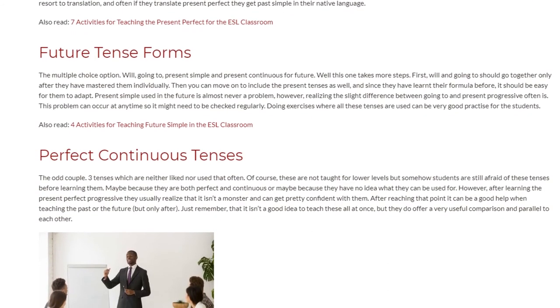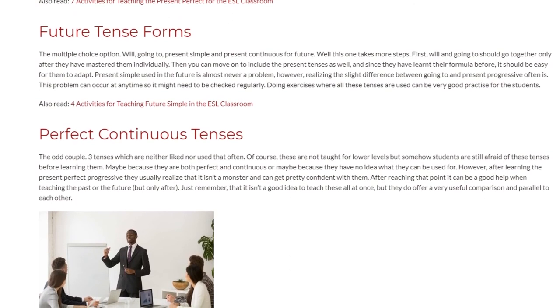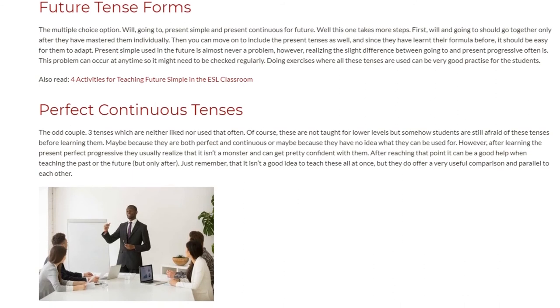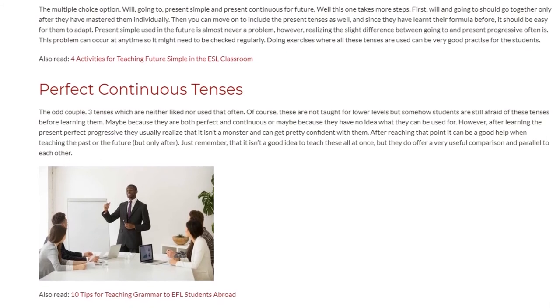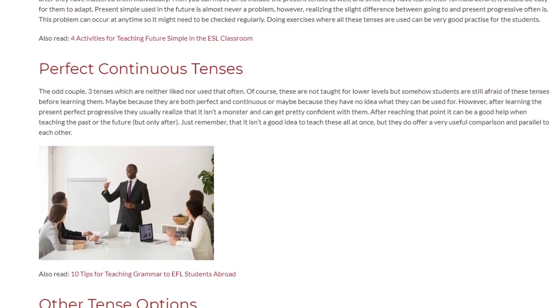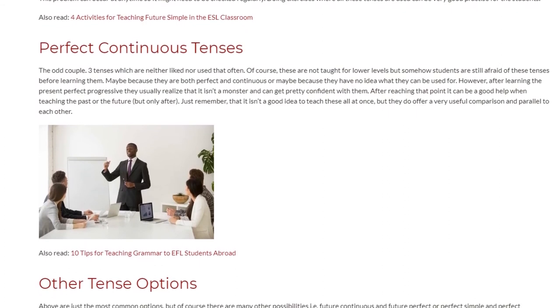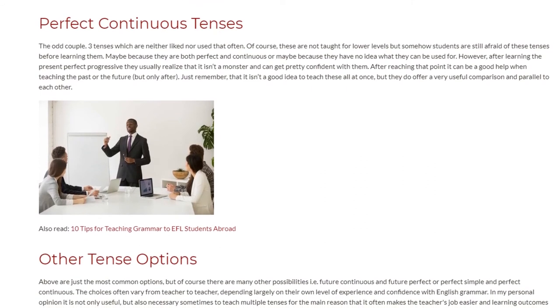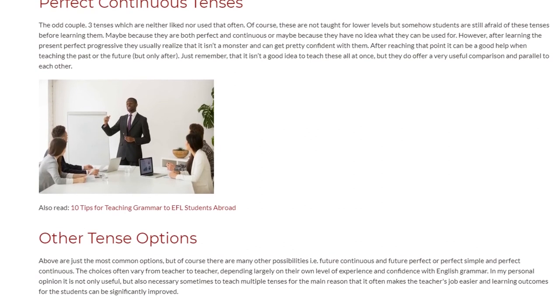Perfect Continuous Tenses: The odd couple. Three tenses which are neither liked nor used that often. Of course, these are not taught for lower levels, but somehow students are still afraid of these tenses before learning them. Maybe because they are both perfect and continuous, or maybe because they have no idea what they can be used for. However, after learning the Present Perfect Progressive they usually realize that it isn't a monster and can get pretty confident with them. After reaching that point it can be a good help when teaching the past or the future, but only after. Just remember that it isn't a good idea to teach these all at once, but they do offer a very useful comparison and parallel to each other.